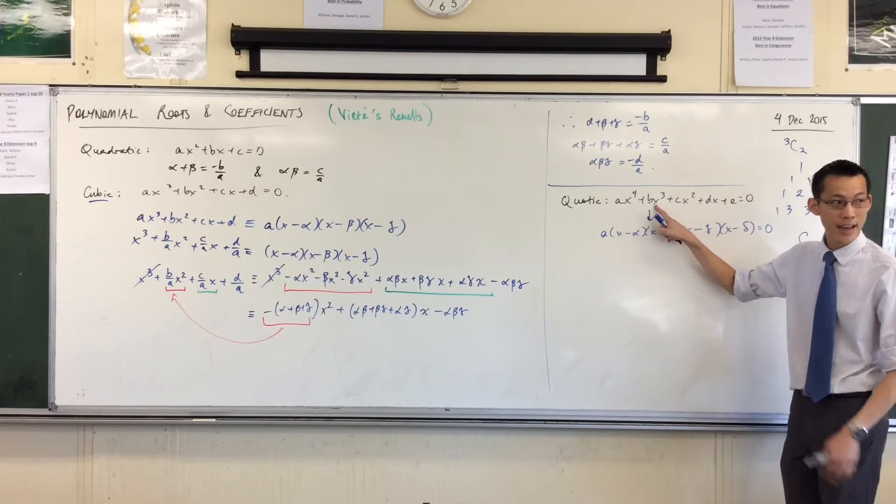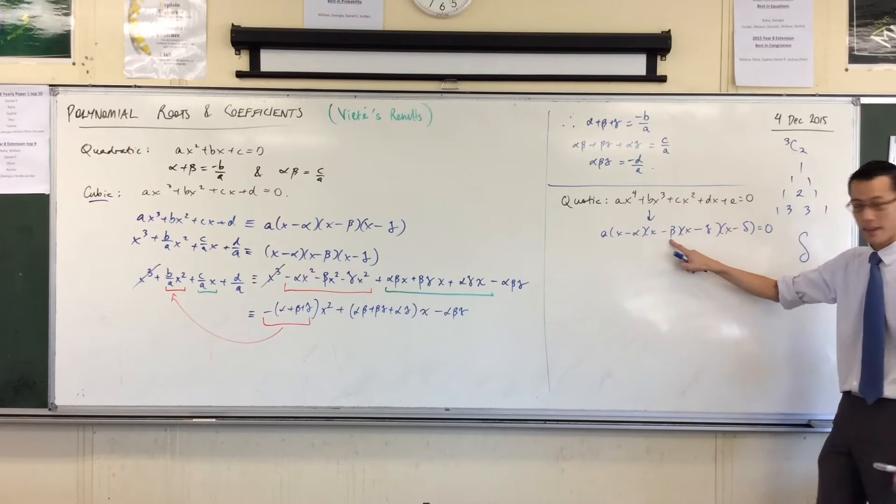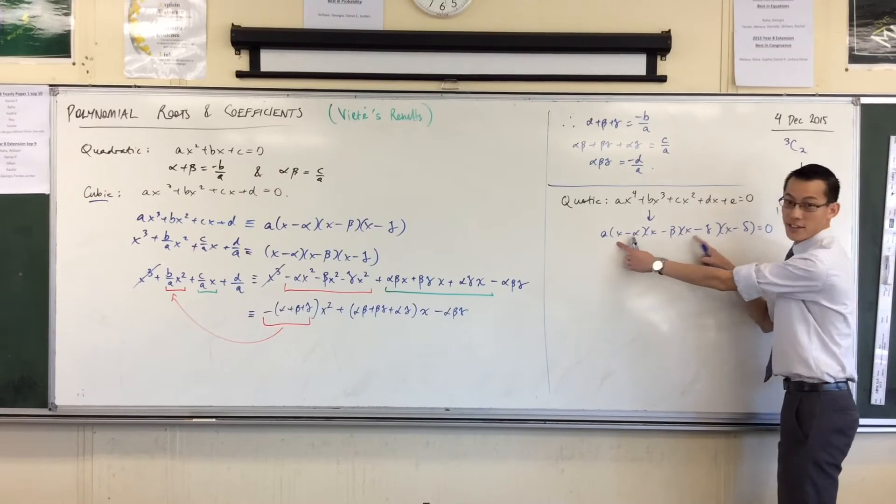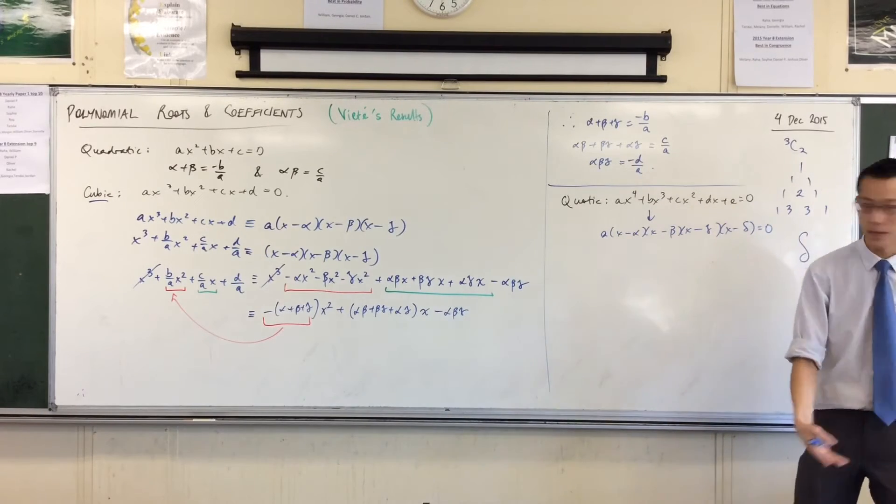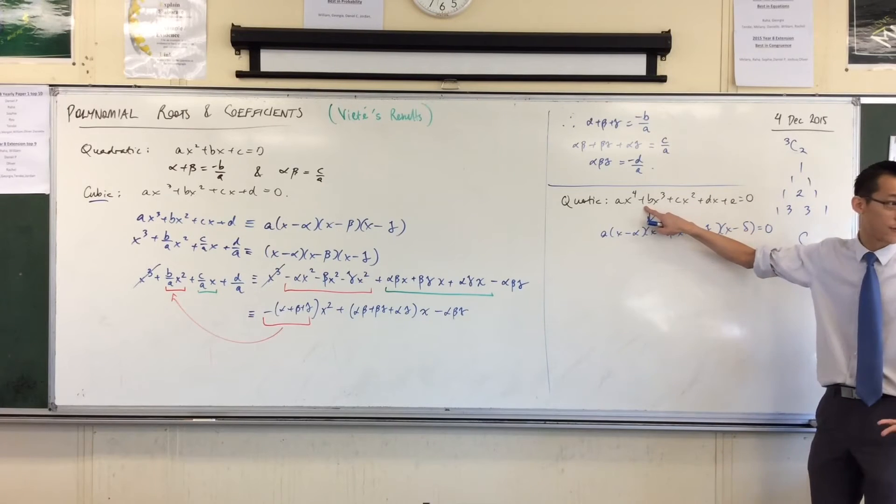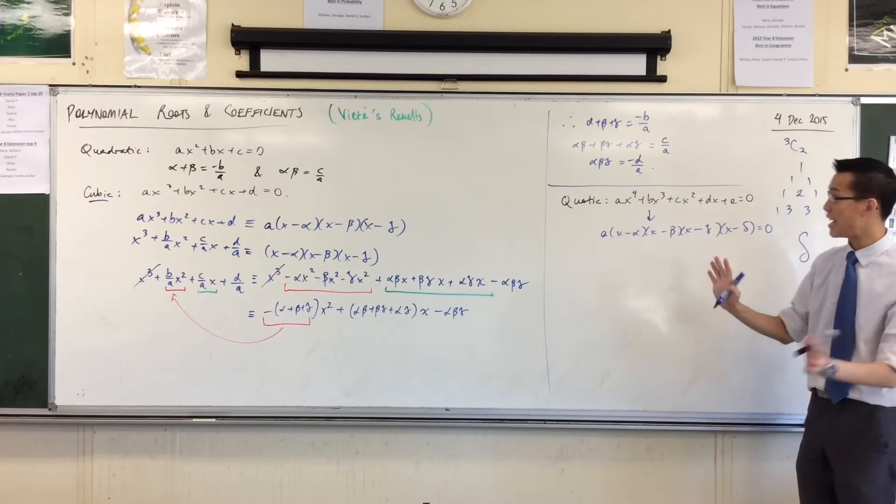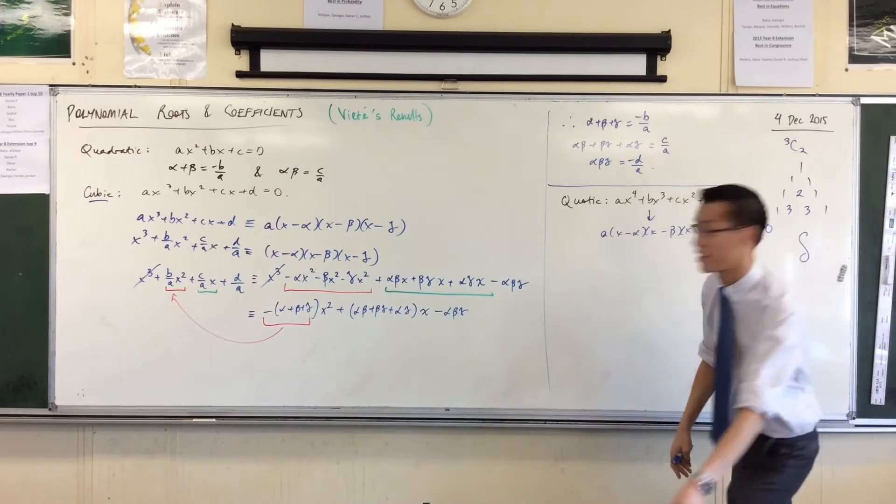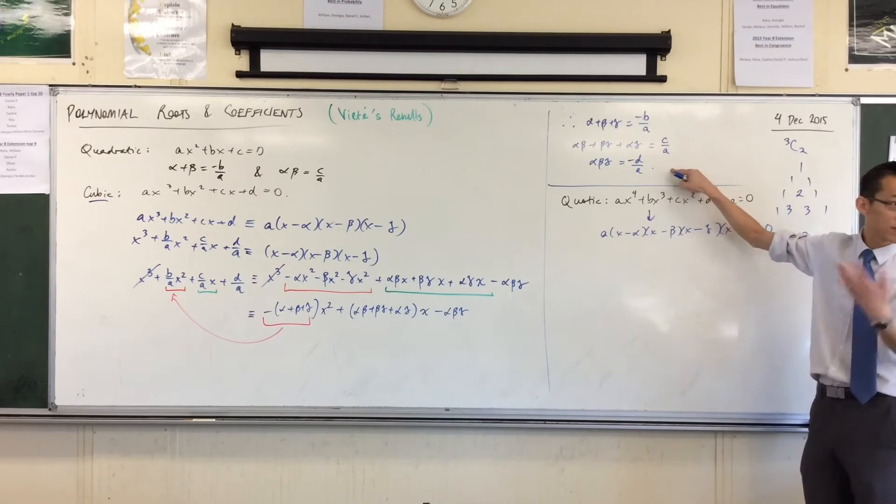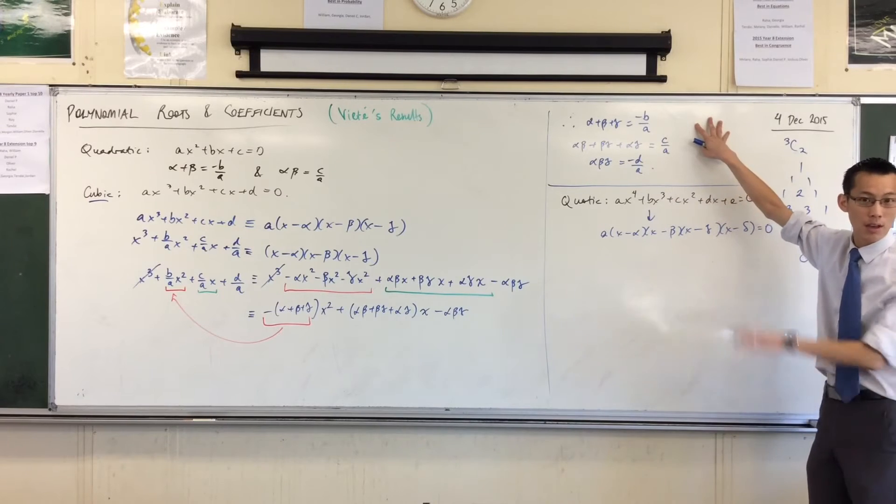If there are 4 roots, think about, for instance, how am I going to get an alpha at the end here? Well, if I get that alpha, it's going to multiply by x, x, x, x. So you're going to get an x cubed term. So I'm comparing to this guy.